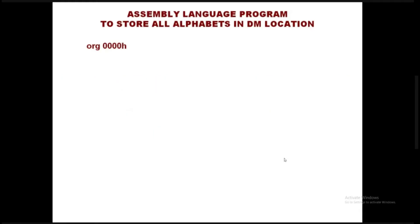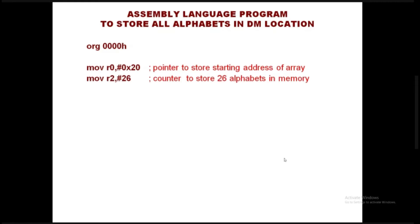This assembly language program stores all alphabets in the data memory locations. R0 is acting as a pointer where memory location 20 is the starting location for the alphabets, and we have 26 characters. R2 is the counter loaded with 26. Note that writing just 26 allows the assembler to convert it to its hexadecimal equivalent. So R0 is a pointer and R2 is a counter.